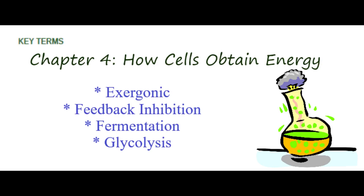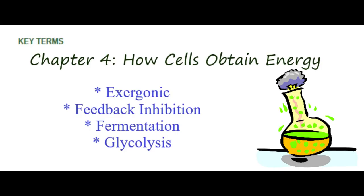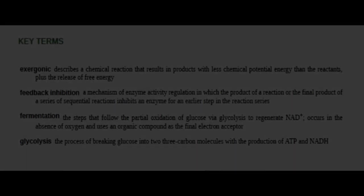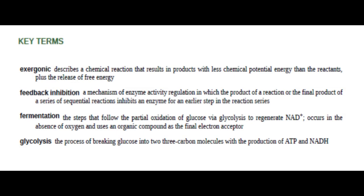Let us review some key terms on how cells obtain energy. Exergonic describes a chemical reaction that results in products with less chemical potential energy than the reactants, plus the release of free energy.